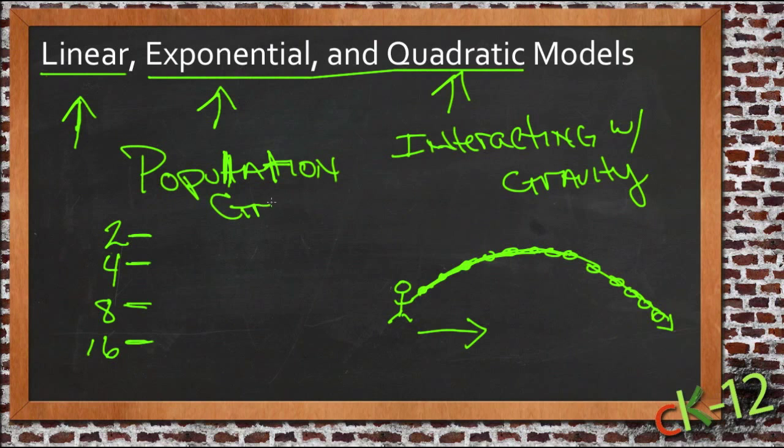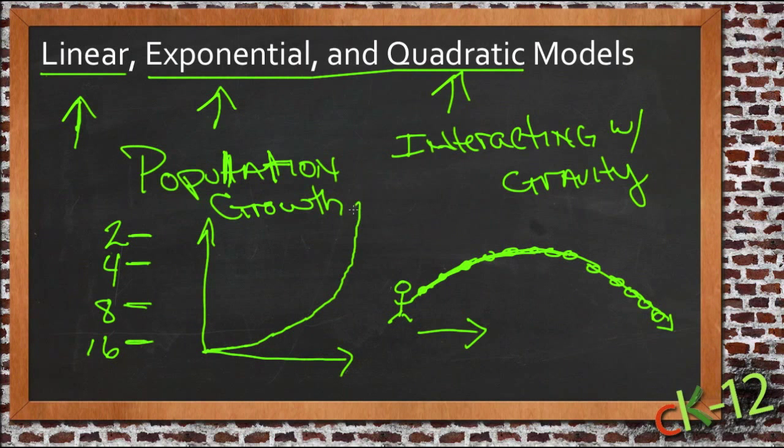So population growth will come out as an exponential model. And if you graph an exponential model, instead of having a straight line like a linear graph or a parabola like a quadratic graph, you get an arc that starts out kind of level-ish, and then as it starts to go up, it goes up faster and faster and faster until it starts shooting way up really fast, because these values double or triple or whatever your multiplication value is every time.